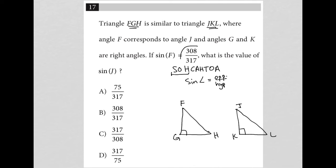So if my sine is 308 over 317 for F, I know that means the opposite side of angle F must be 308 and the hypotenuse must be 317.